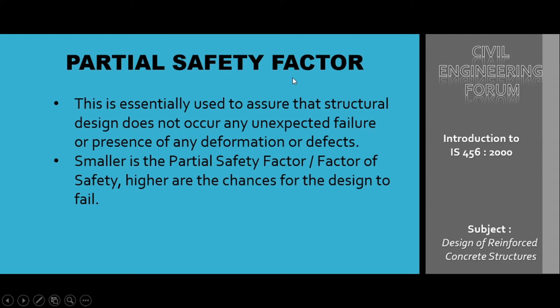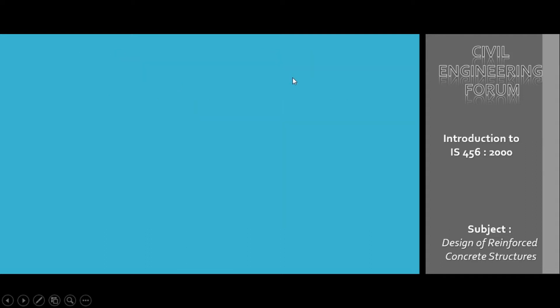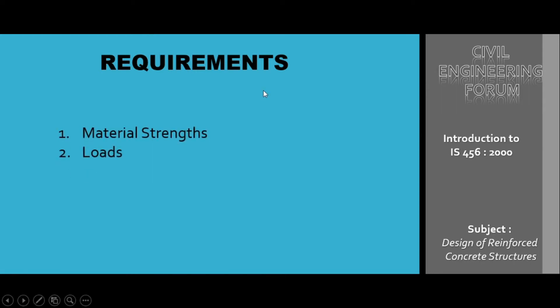Now we'll understand why we need partial safety factor — its requirements. This is basically due to two reasons. The first one is material strength, which means that material strength may be reduced due to unexpected reasons. The second one is load, meaning loads analyzed or assessed on any structure may increase due to any such reason.